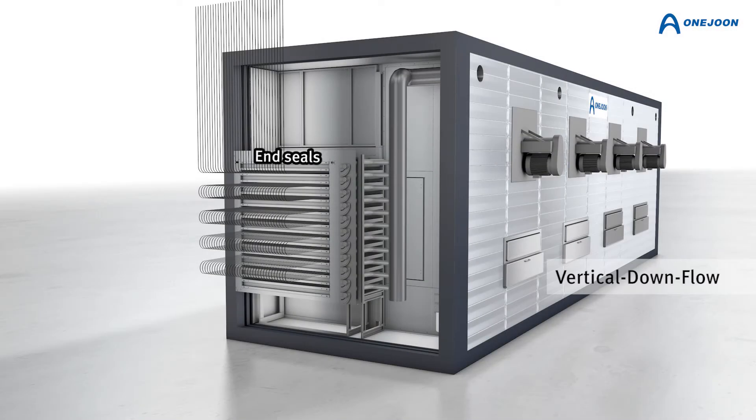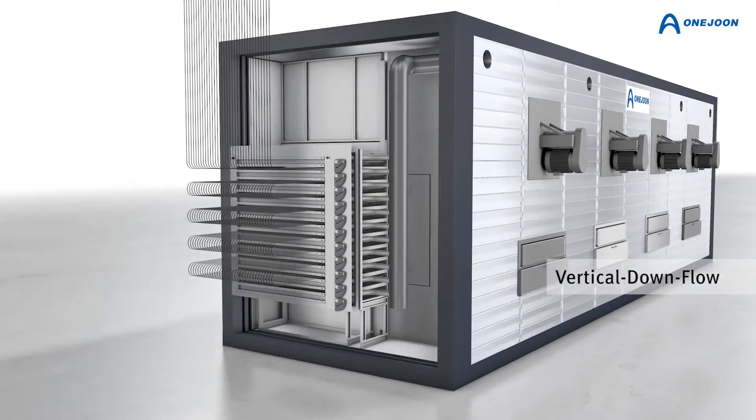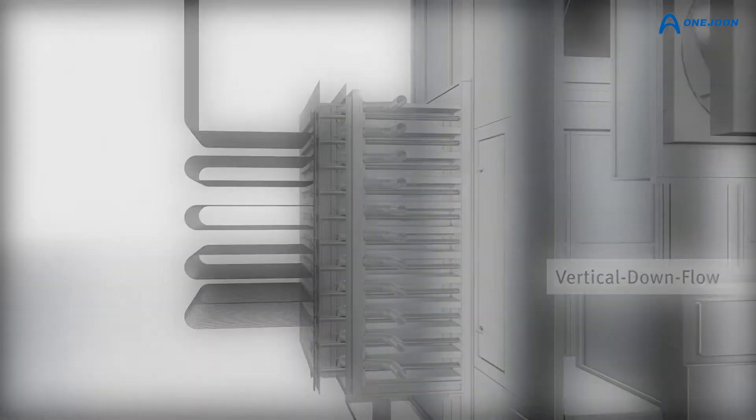The end seals, located at both ends of the oven, separate the contaminated process air from the external environment, providing a safe environment for the equipment operators. The patented end seal system with individually adjustable airflow systems are integrated within the oven housing. The 1June end seal system prevents the migration of cold ambient air from outside of the oven body, resulting in an extension of the effective heating length of the process chamber.